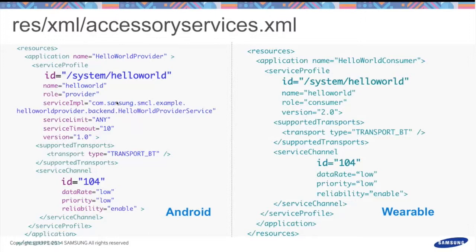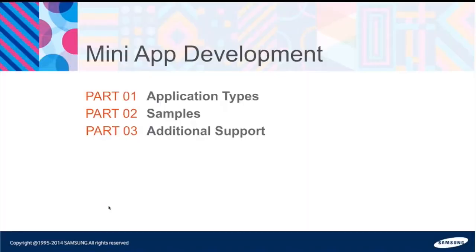The AccessoryServices XML file is stored in your XML directory and defines the connection parameters between the two devices — they are nearly identical between Android and Tizen. On the Android side there are extra lines defining the service implementer, the component that makes the Bluetooth socket call. Roles must be defined: on the Android side it is the provider, on the wearable side it is the consumer. Everything else is identical between the two.